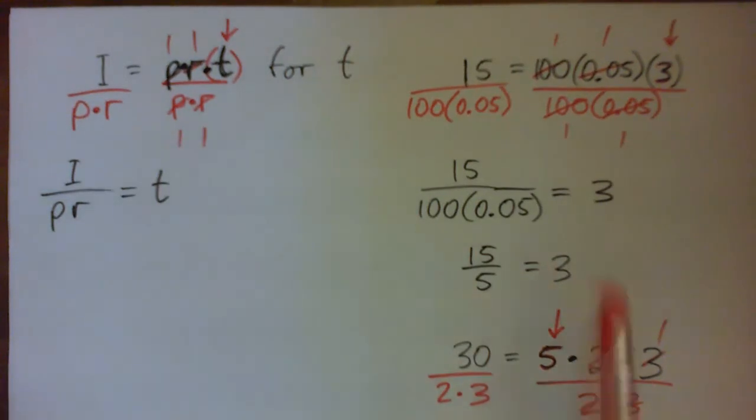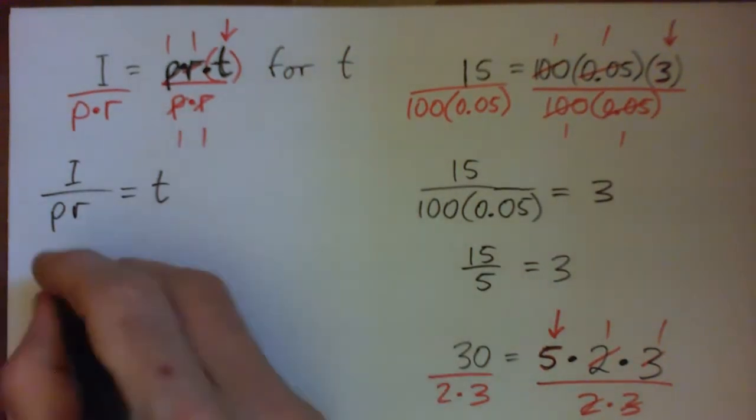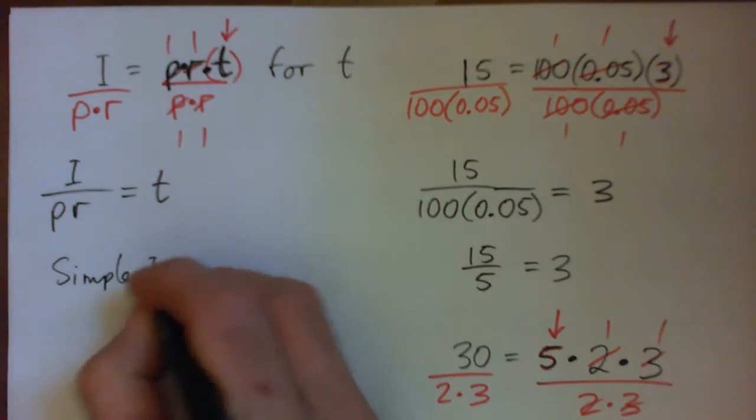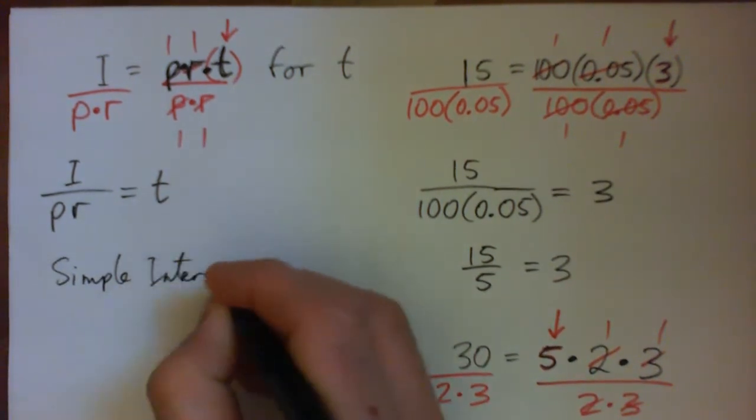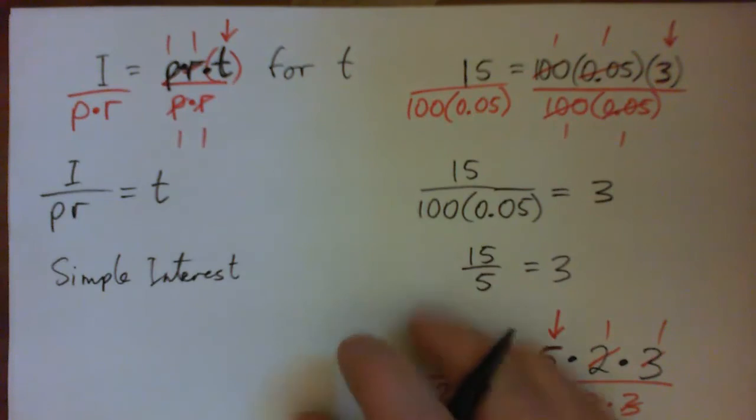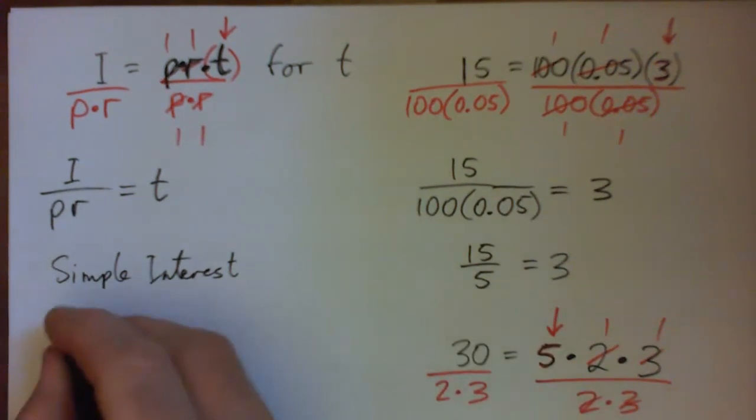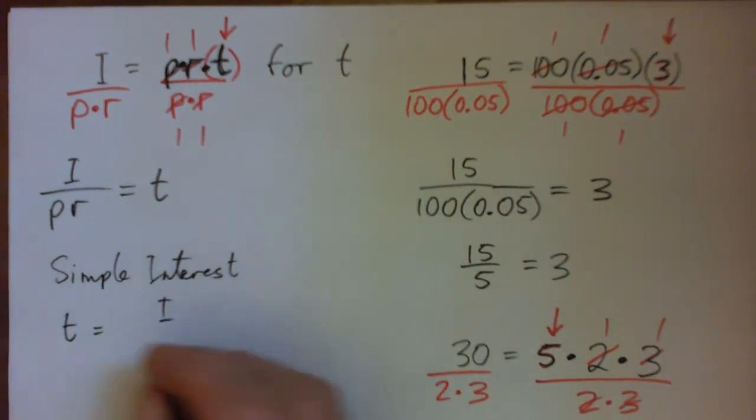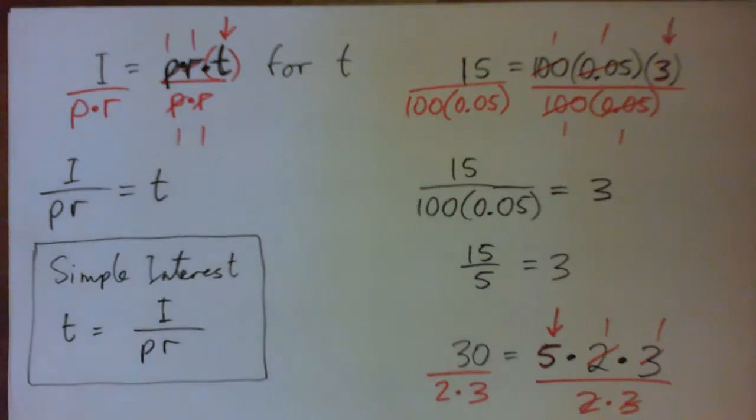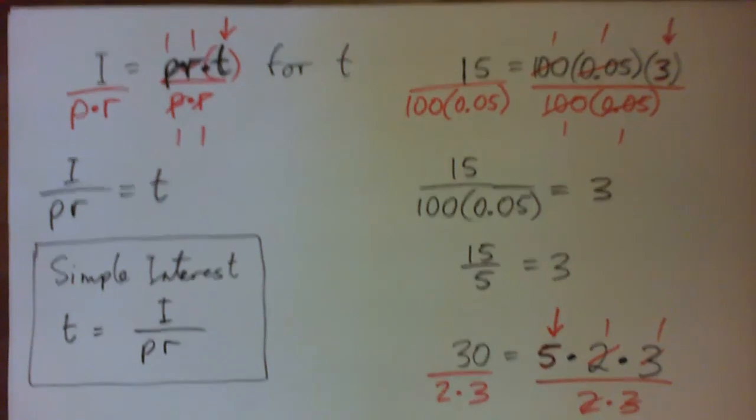And the reason formulas are useful is that when you have simple interest, which is kind of like, a lot of loans use simple interest, actually. The time is equal to the interest over the principal times the rate. And that's for any time, interest, principal, or rate. So that's the simplification of math. So it's not just for some specific example, it's for all examples. So time equals I over PR. I think we beat that one to death, no?